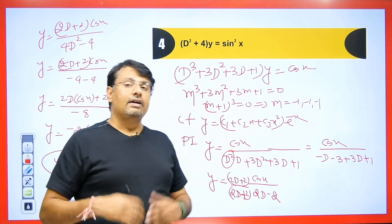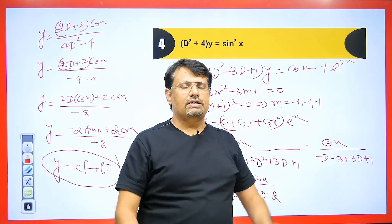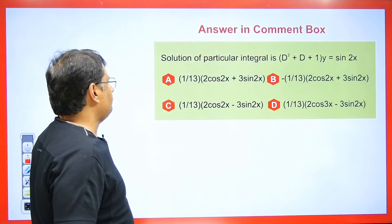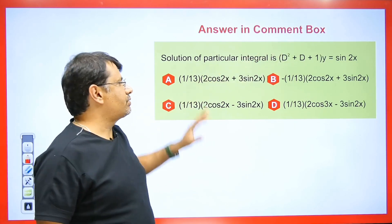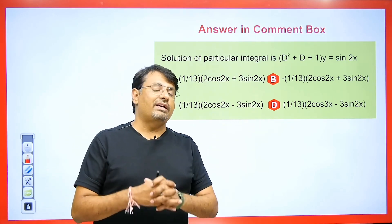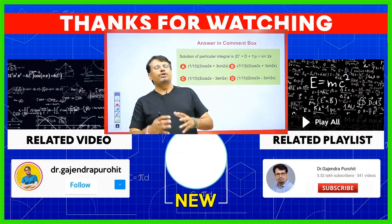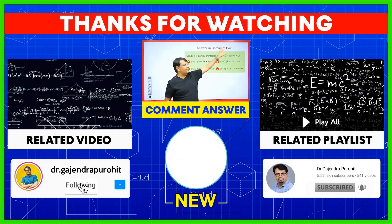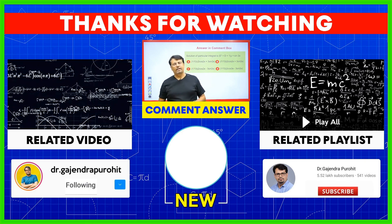If a question involves both sin x and e^(2x), find the PI of each term separately and add them — this type of question comes in exams. Now students, you have to solve this practice question: (D² + D + 1)y = sin 2x, with four options given. Find the correct answer and let me know in the comment box how long it took you. Thank you for watching — please like, share, and subscribe to the channel. Check out the differential equations playlists from the links below.